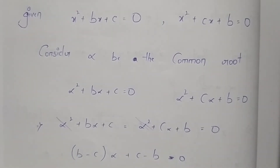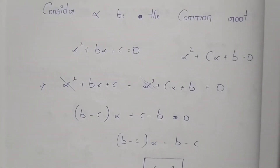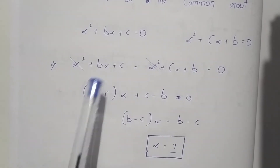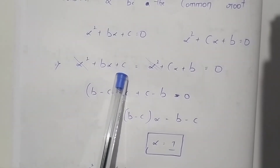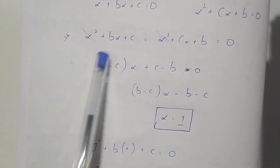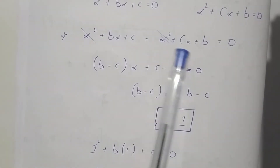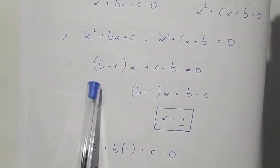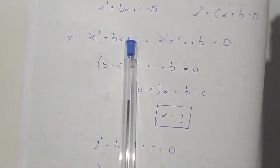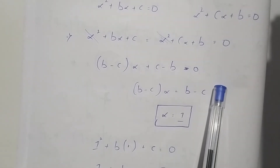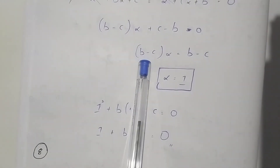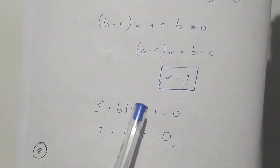Since both expressions equal 0, we equate the left-hand sides. We get: alpha squared plus b·alpha plus c equals alpha squared plus c·alpha plus b. Cancelling alpha squared from both sides and rearranging, we get b·alpha minus c·alpha plus c minus b equals 0, which simplifies to show that the value of alpha is 1.